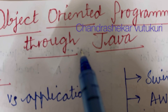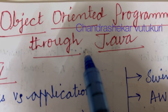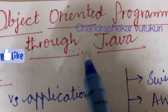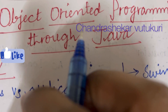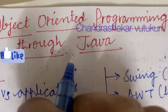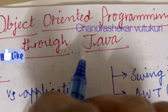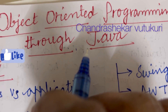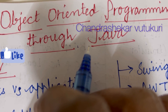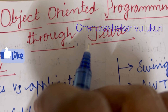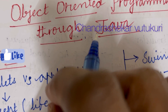Welcome back students. This is Chandrasekhar Utkuri. In this video, upon the request of many students, I am going to cover the very important concepts for the course Object Oriented Programming through Java under JN2H for R22 Regulation, which is a common course for all branches of computer science, engineering, and allied specializations. In today's video,